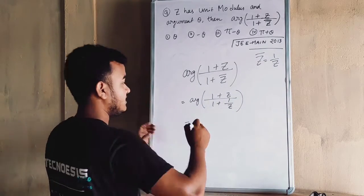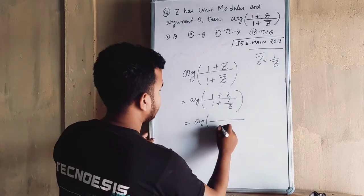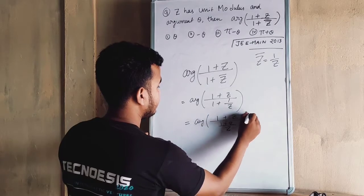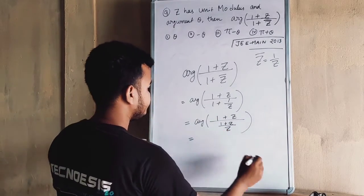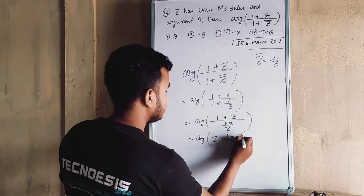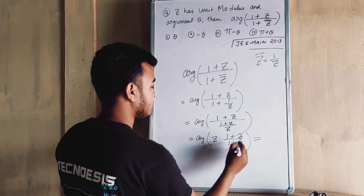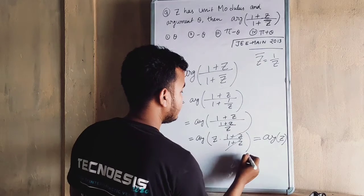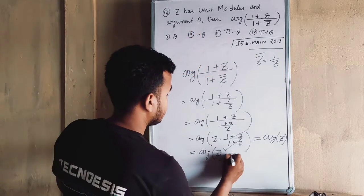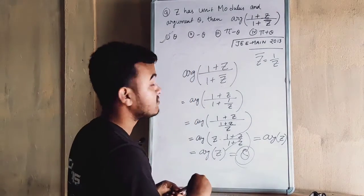Now, multiplying through: Z into (1 + Z) equals (1 + Z). So the expression simplifies — this is the argument of Z squared. That means the argument of Z squared equals 2 times the argument of Z, which is 2 theta. So the final answer is theta — the argument is theta.